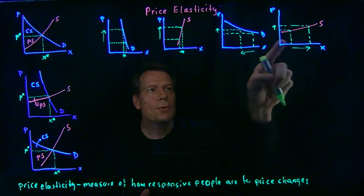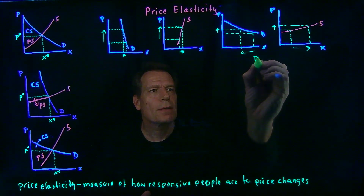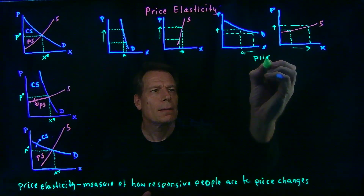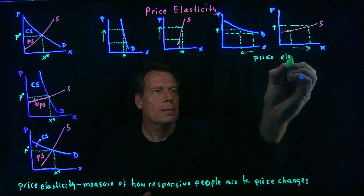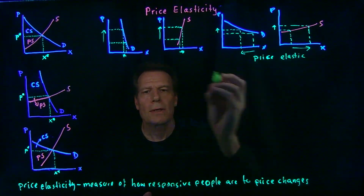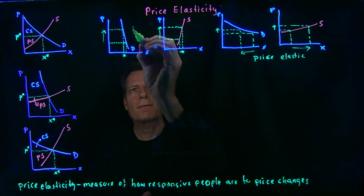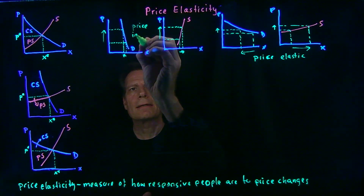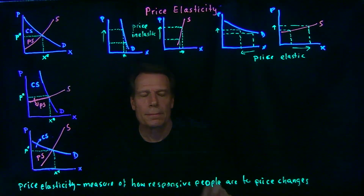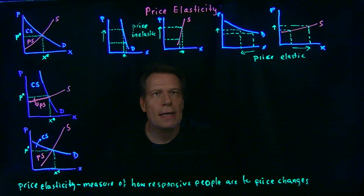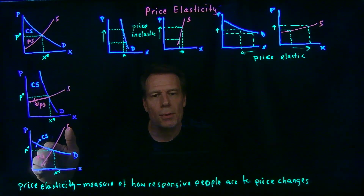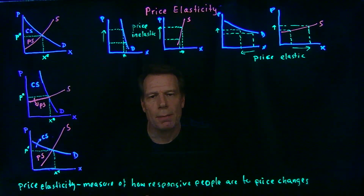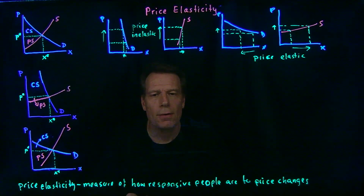So these two shallow curves are examples of curves that are relatively price elastic, whereas the steeper curves are relatively price inelastic. We can see how the relative distribution of consumer and producer surplus in the market depends on the relative price elasticities of demand and supply.